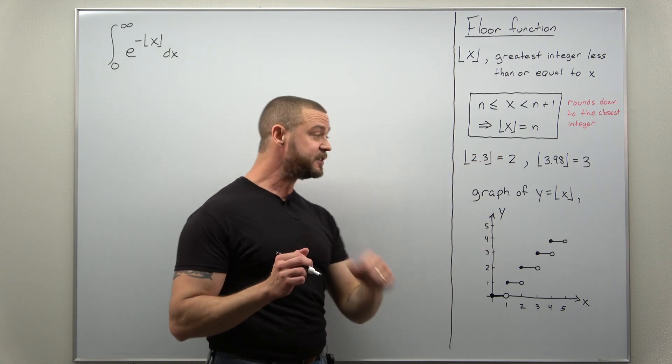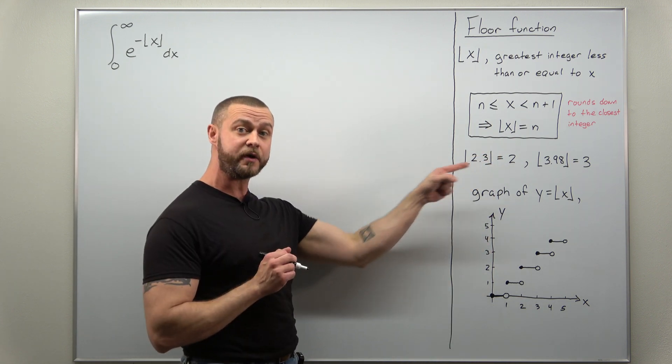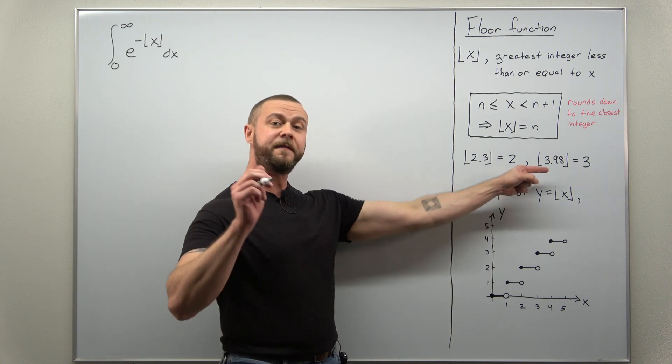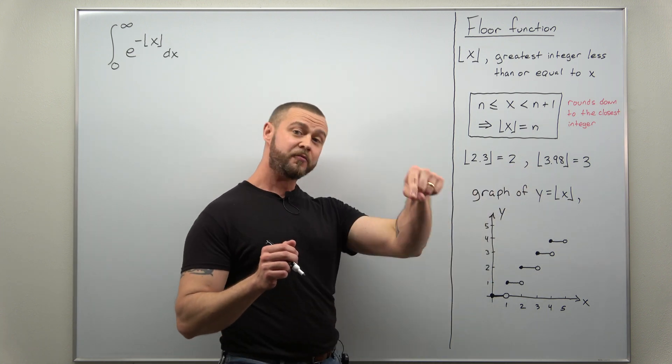If we take a look at some of these basic values here, the floor function of 2.3 rounds down to 2, floor function of 3.98 rounds down to 3.